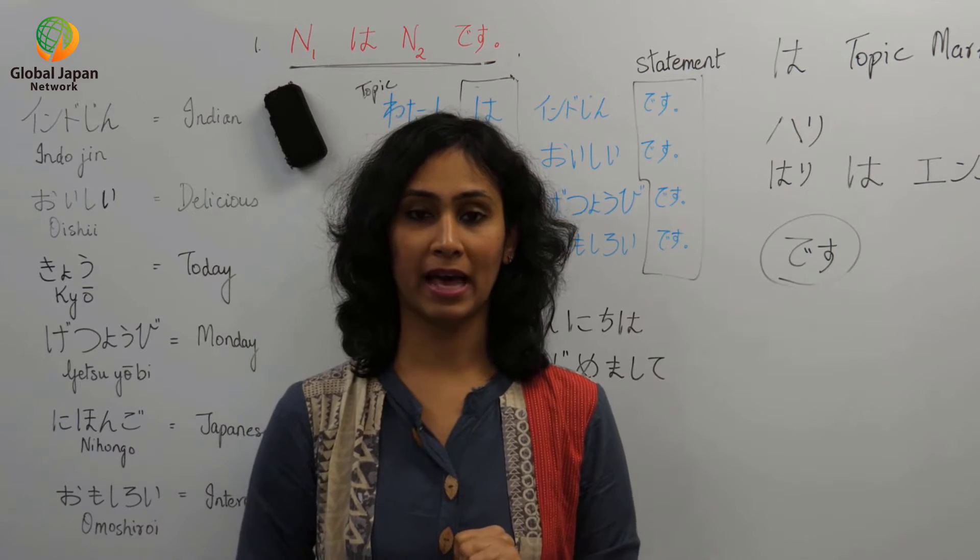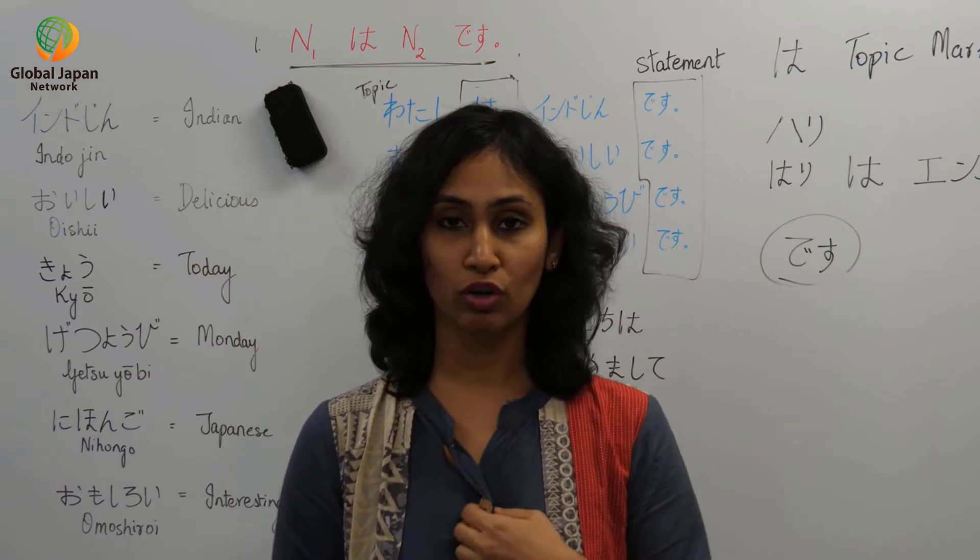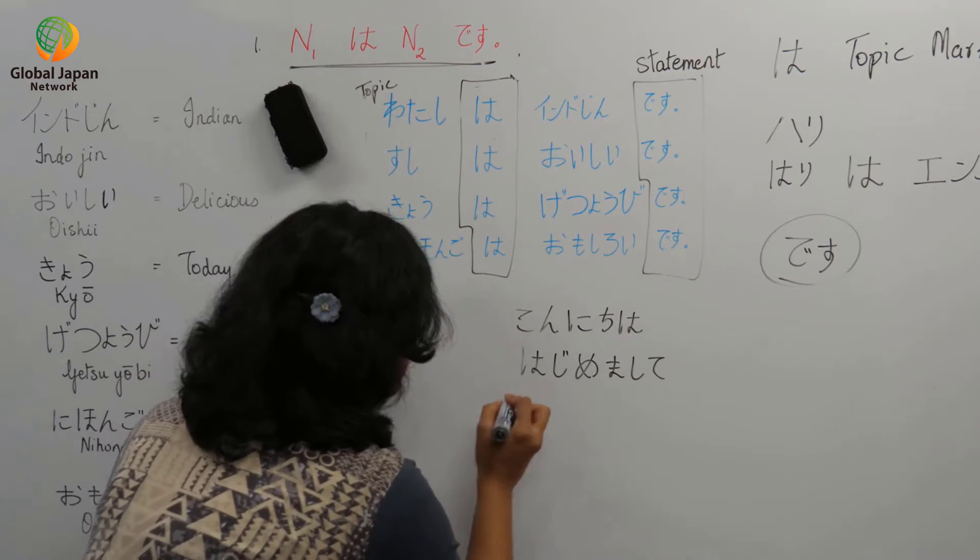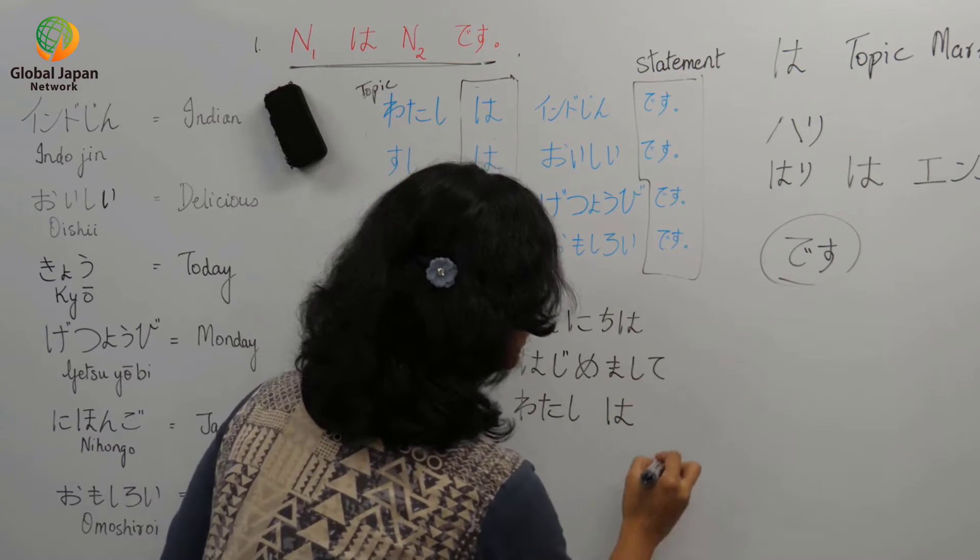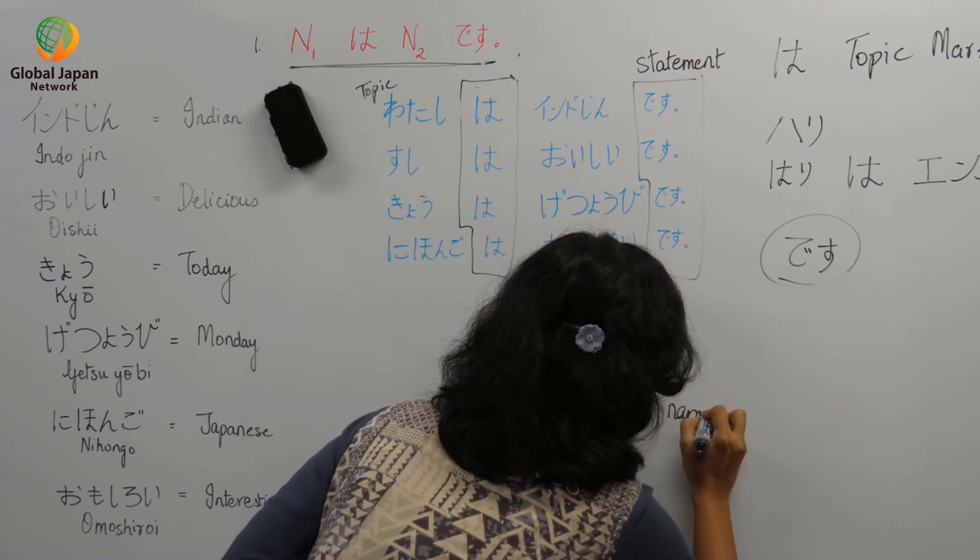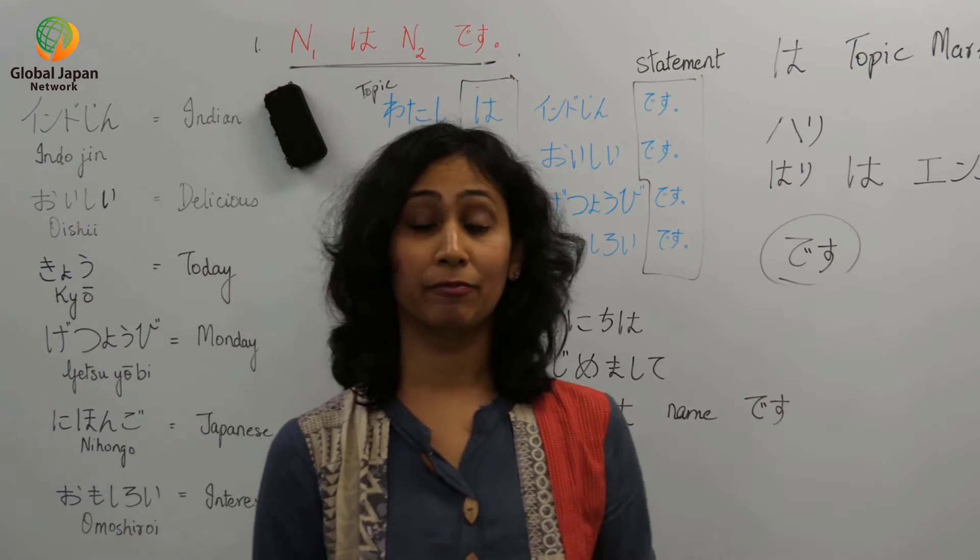Konnichiwa hajimemashite and then you're going to tell I am so-and-so, that is you're going to tell your name. Watashiwa your name followed by desu. I am telling the person that I am from India.